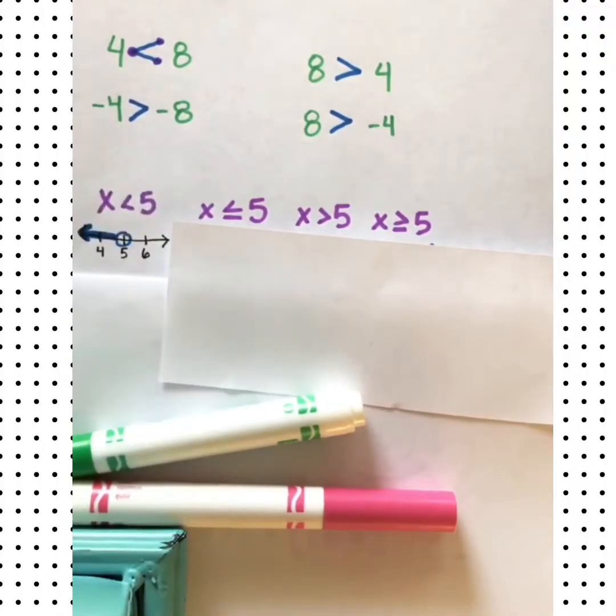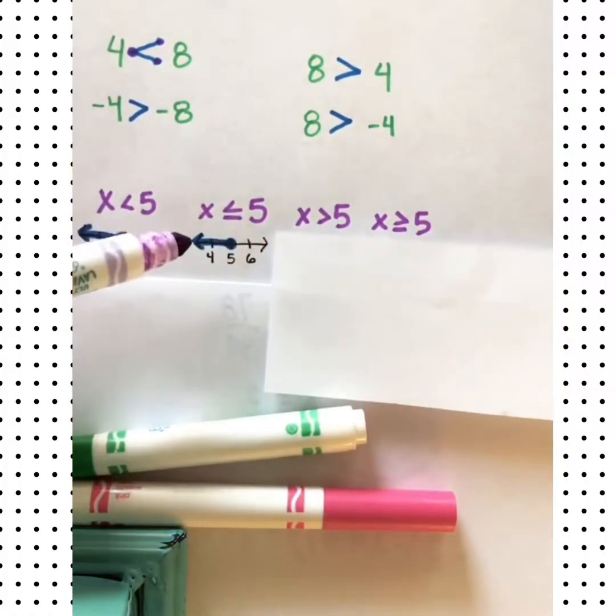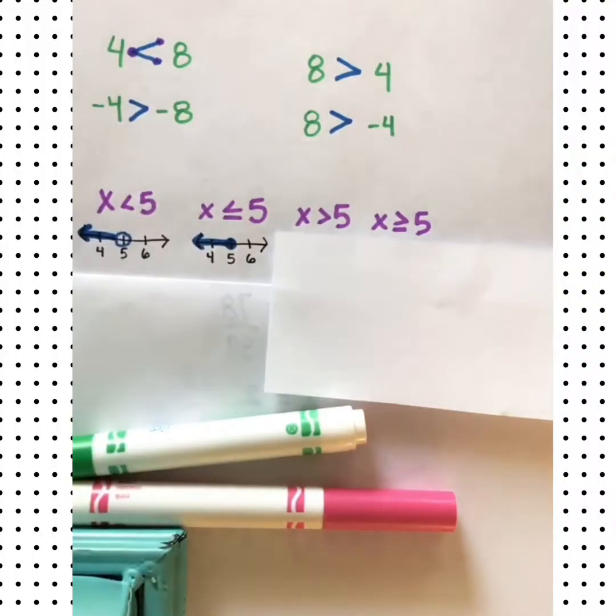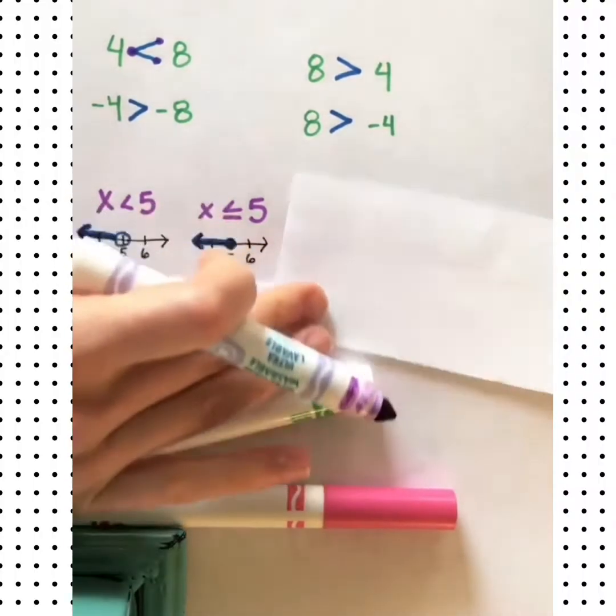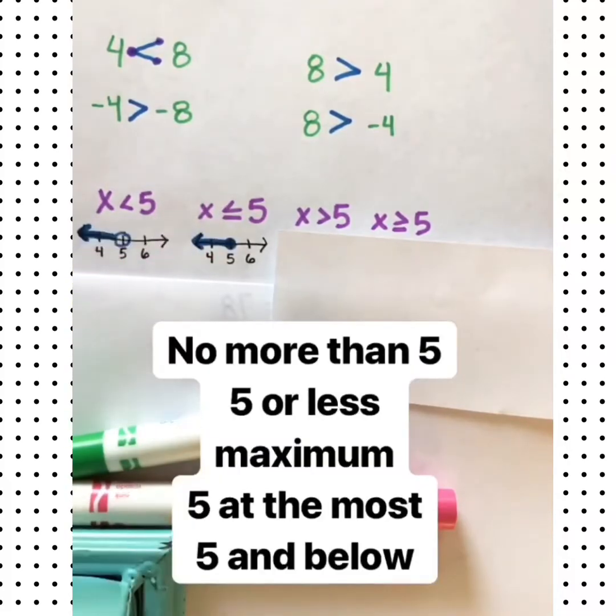Then we see x is less than or equal to 5. In this case, we'll do a closed dot, meaning 5 is included in the solutions as well as every number, every value that is less than 5.